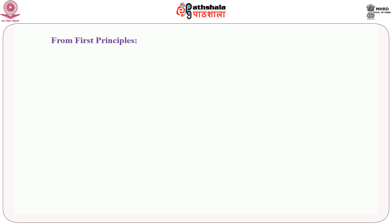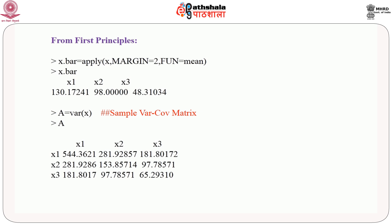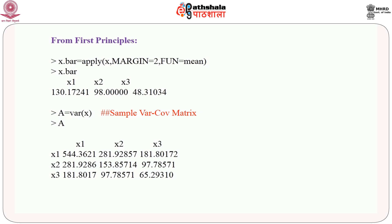Since the data supports that it comes from a multivariate normal distribution, let us conduct the Hotelling T-squared test from first principles. We require the sample mean vector, computed using the R function apply over the matrix x with margin equal to 2 and function as mean, which computes the column means of the matrix x. Here we have the sample mean vector.